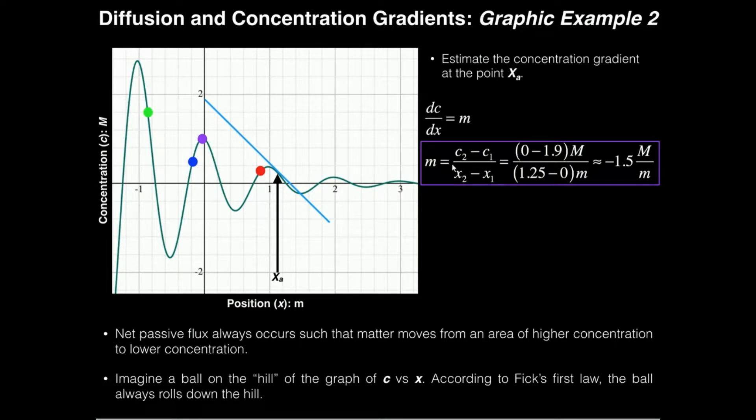Remember slope is defined as y2 minus y1 over x2 minus x1, although in this case y is concentration so we can express it as c2 minus c1 over x2 minus x1.